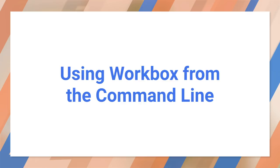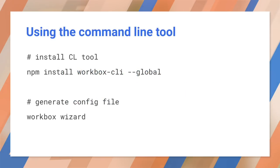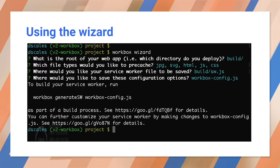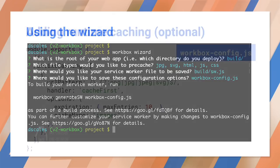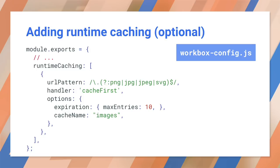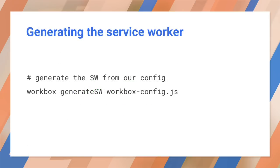Let's walk through an example of installing Workbox and creating a service worker. We'll do this from the command line. We'll need to install Node, then use npm to install the workbox-cli tool. Then we call a Workbox wizard to create a configuration file. We tell the wizard where our build directory lives and the files we want to cache. We then give locations for the service worker template and configuration file. By default, the wizard's code pre-caches everything forever. You may want a little more control, such as limiting the number of cached images. If so, you can add a cache rule and a custom cache name.